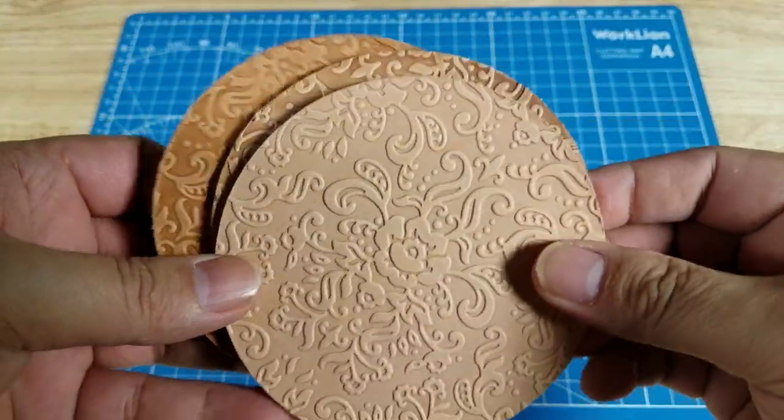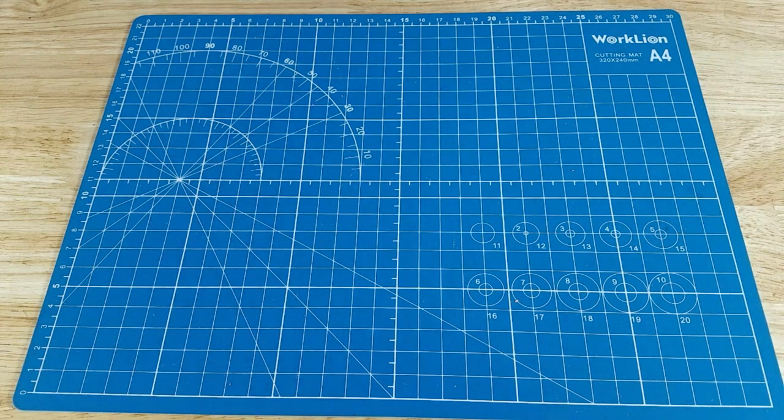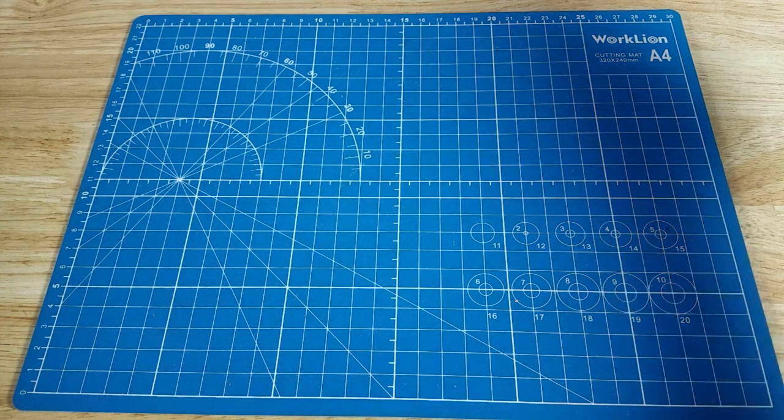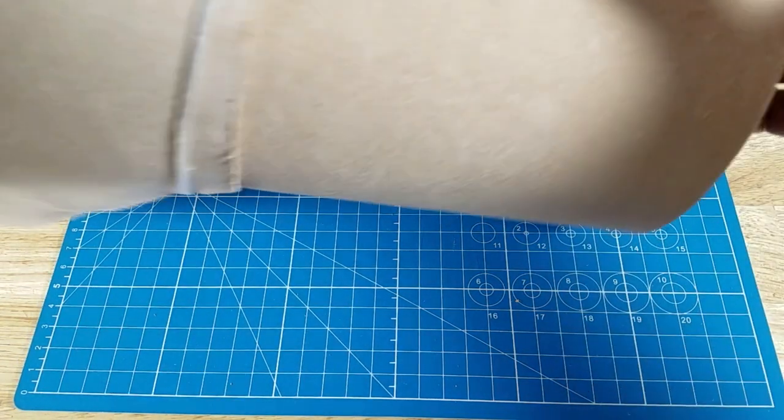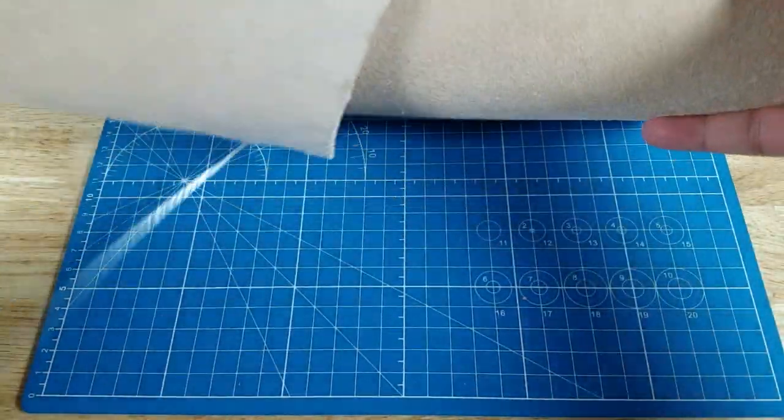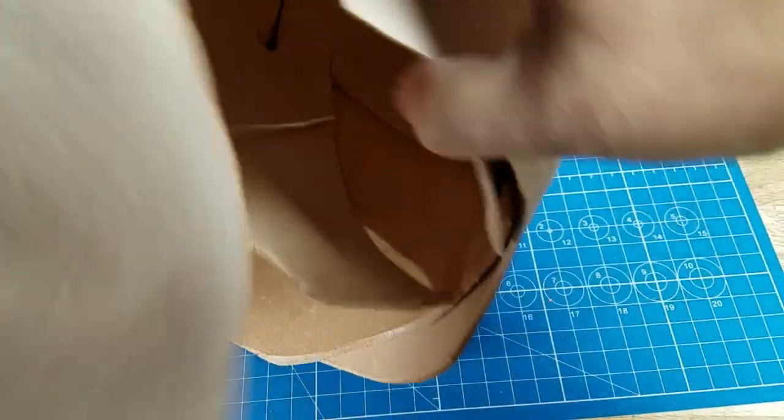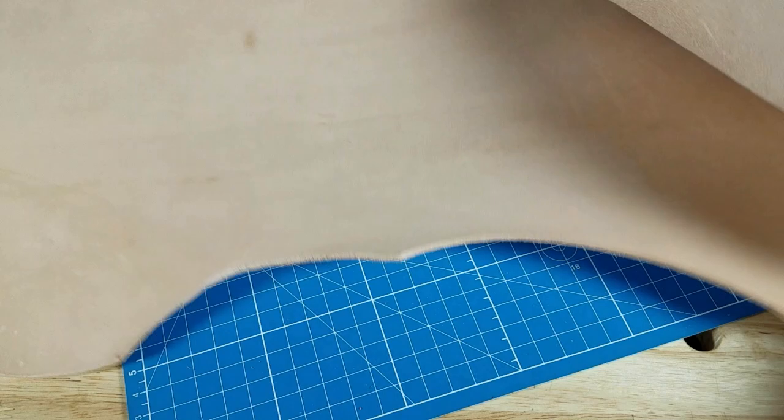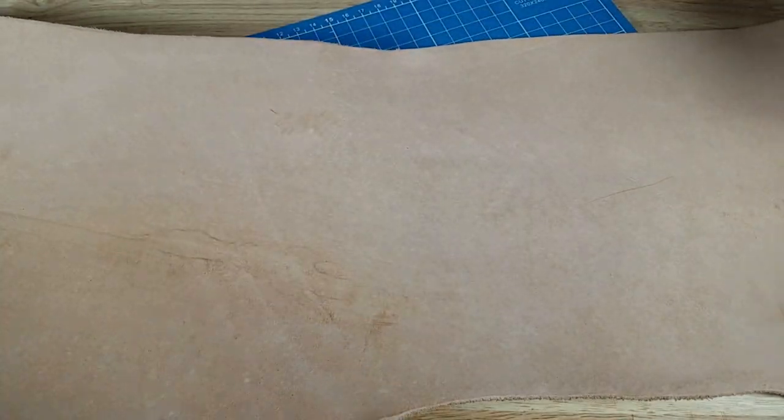Before we get started, if you want to purchase any of the tools including the leather mentioned in this video, check out the links in the description below. The leather I'm using is simple belly leather from Tandy, around $15, thickness around four to six ounces. It's veg tan leather. Let me see which side I want to use.